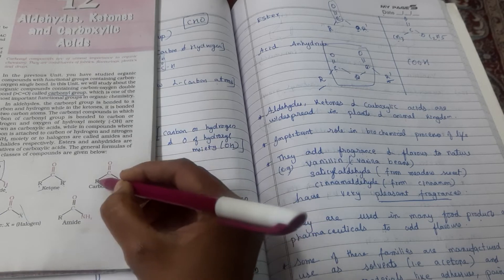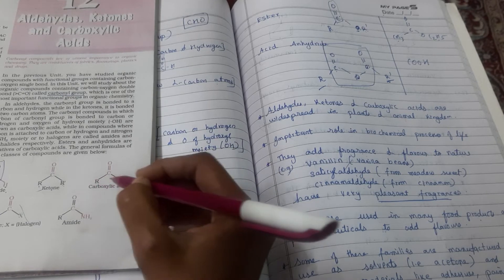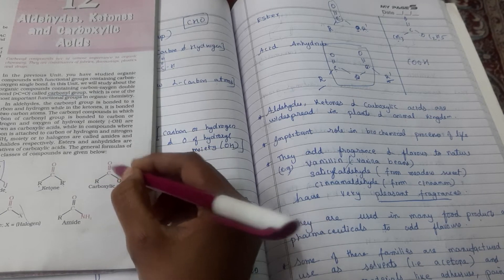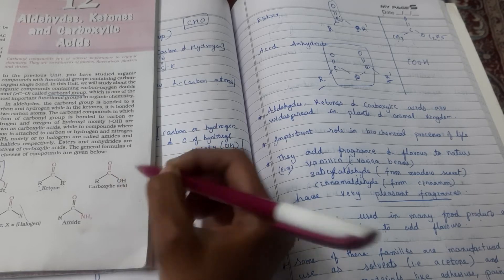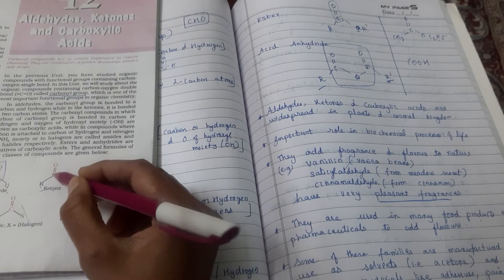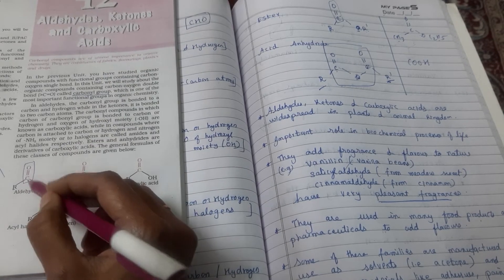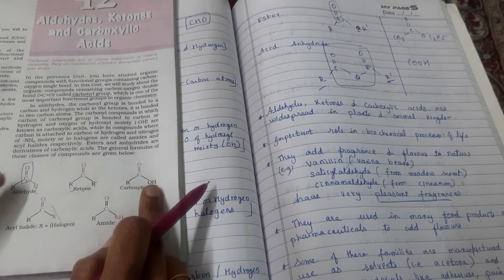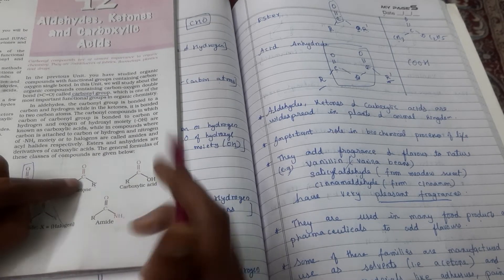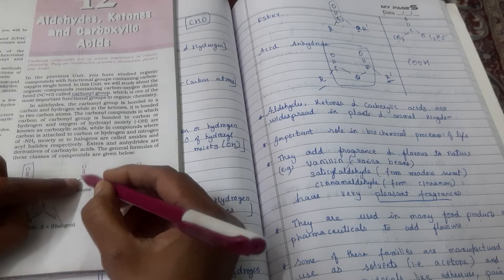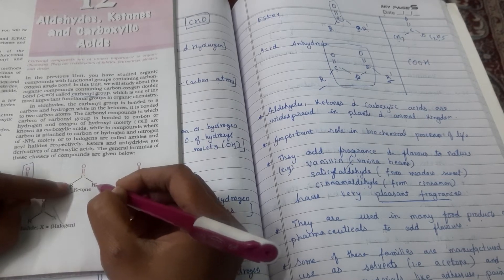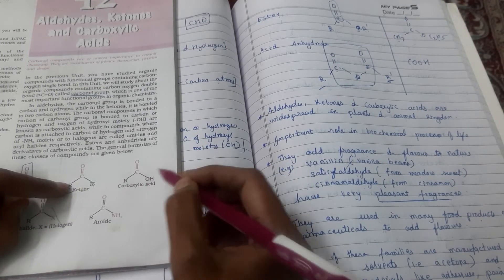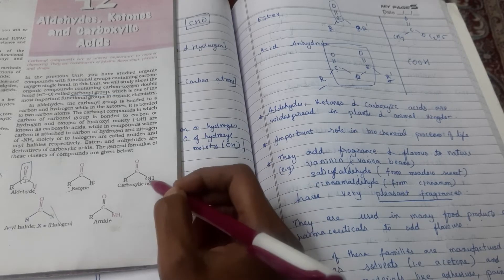It's C double bond O. Here it's R. The acid group — we call it OH. So this is COOH. Acids is COOH. Aldehyde is CHO. So first, all three of them are easy to remember: CHO is aldehyde, C double bond O is ketone, and here it's the OH group — it's carboxylic acids.